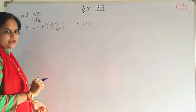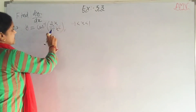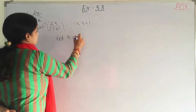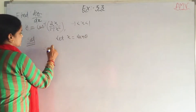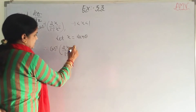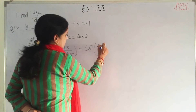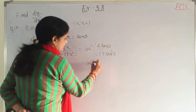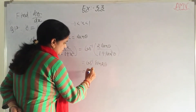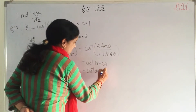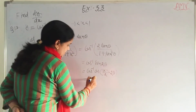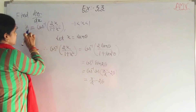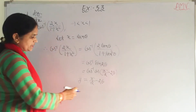Question number 13. Find dy by dx. Here y is equal to cos inverse (2x) by (1 plus x square). Here also take x equal to tan theta. So cos inverse (2x) upon (1 plus x square) becomes cos inverse (2 tan theta) upon (1 plus tan square theta). This is the formula for sin 2 theta. Now write cos inverse as it is and here it is cos (pi by 2 minus 2 theta). So y is equal to pi by 2 minus 2 theta.